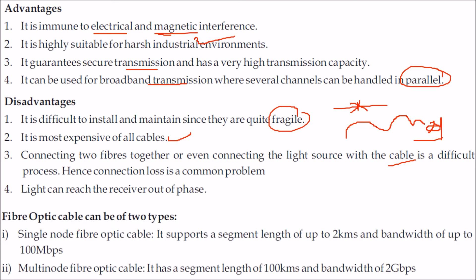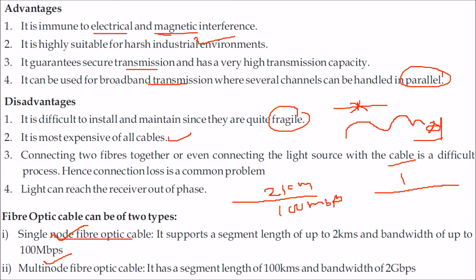Fiber optic cable can be of two types: single-mode and multi-mode. Single-mode fiber optic cable supports a segment length up to 2 km and a bandwidth up to 100 Mbps, while multi-mode fiber optic cable supports segments up to 100 km and bandwidth up to 2 Gbps.